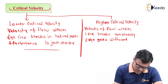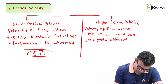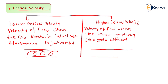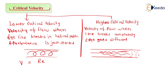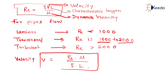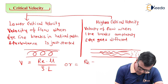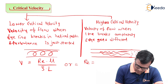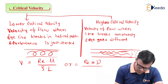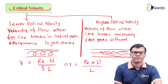At lower critical velocity the pipe shows a dye having a helical path, and at higher critical velocity the dye gets completely diffused and disappears at a particular portion. To calculate velocity: V equals Re·μ/(ρ·L), or equivalently V equals Re·ν/L, where ν (nu) equals μ/ρ is the kinematic viscosity. That is all. Thank you.